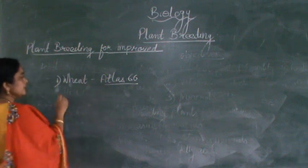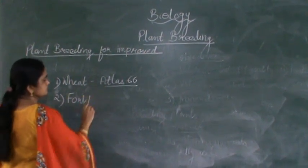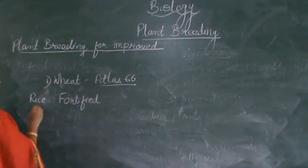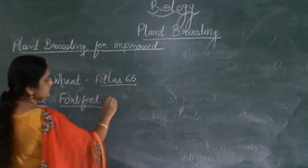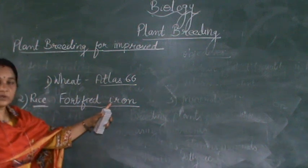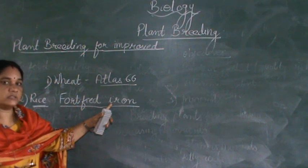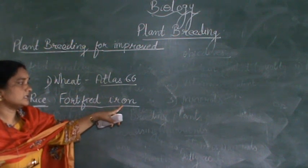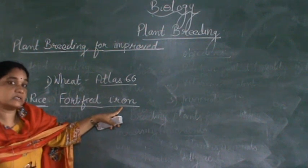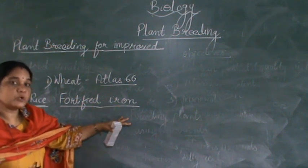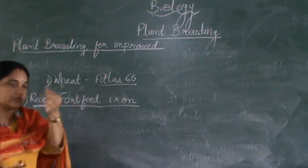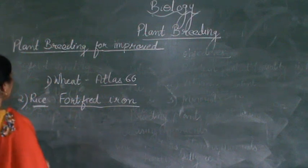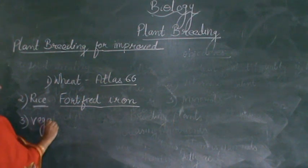Next, there is fortified iron rice — rice which is fortified with iron. You must have seen different varieties of rice: thick boiled rice, small raw rice, and the red colour rice. The red colour rice has a high content of iron. Especially in South India, in Kerala, people depend more on red colour rice. The outer covering (husk) itself has high quantities of iron in it, increasing the iron content by three times.